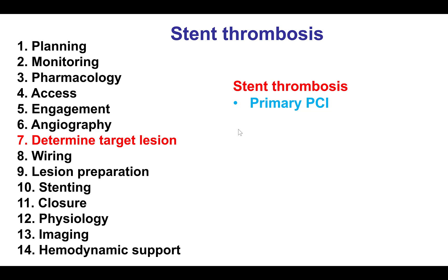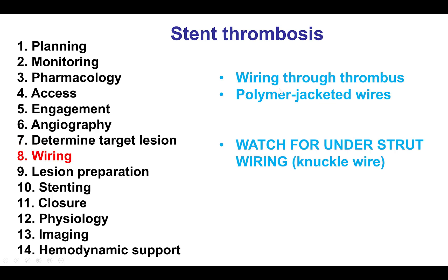Determining the target lesion is in most cases easy, as the stent is often occluded or has an intraluminal filling defect. Wiring can be challenging sometimes. One of the reasons is that the wire might enter under the stent struts, and that is why using a looped or knuckled wire may help to avoid going under the stent struts.